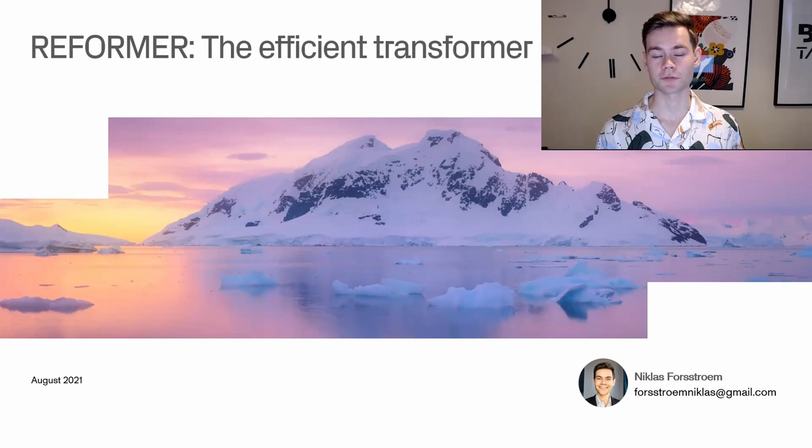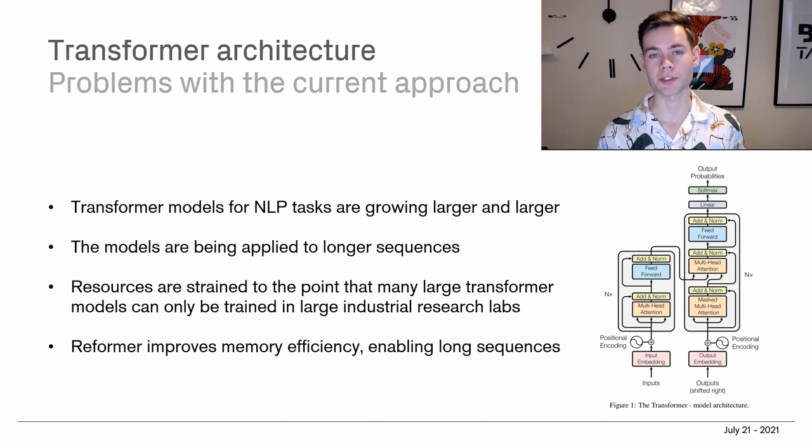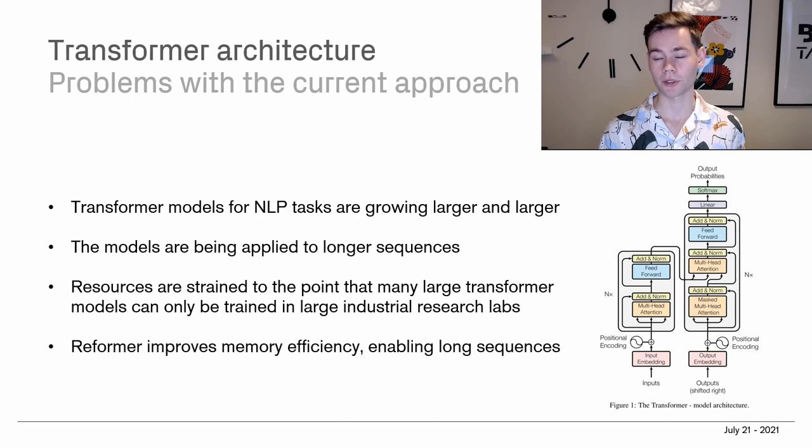What we're looking at today is a research paper called Reformer: The Efficient Transformer. This paper aims to address some of the computational constraints being put on language models currently. Transformer models are widely implemented nowadays for NLP tasks, and we had a video on BERT, which is one very common model that uses transformer architecture.